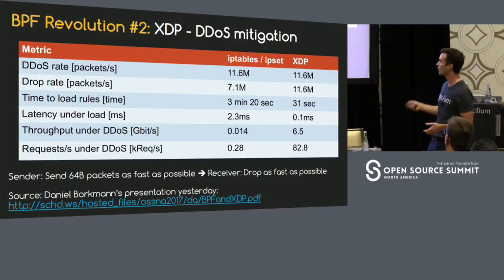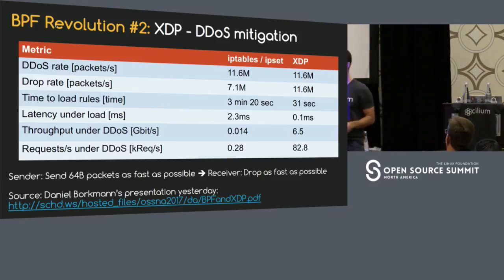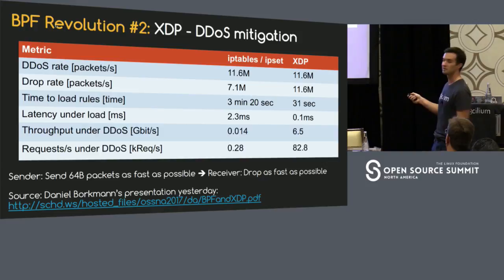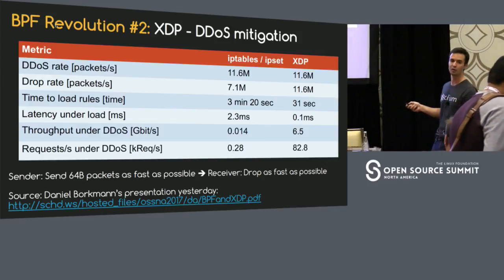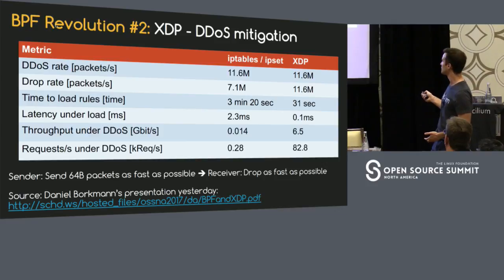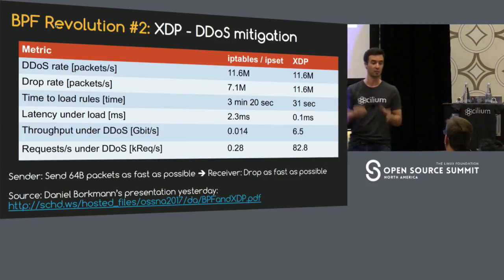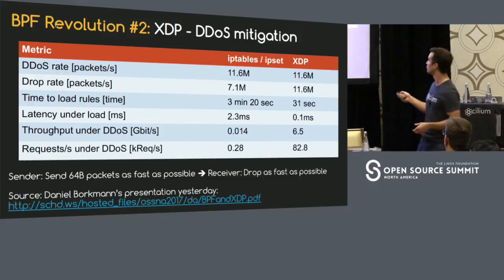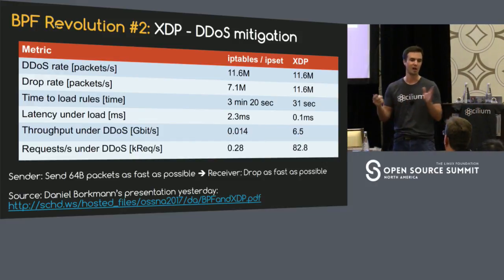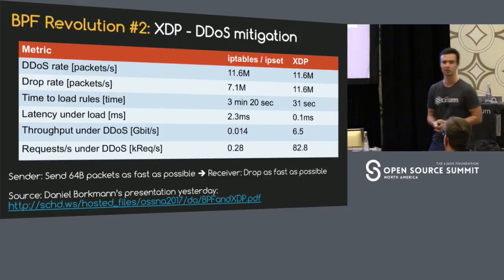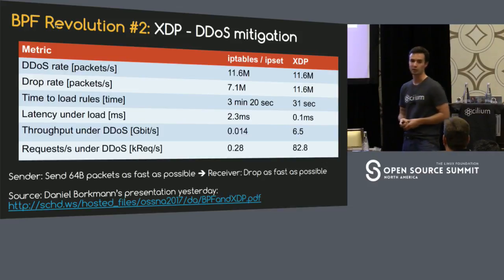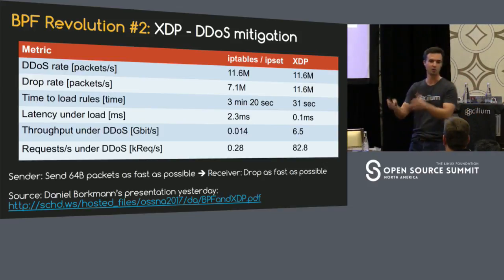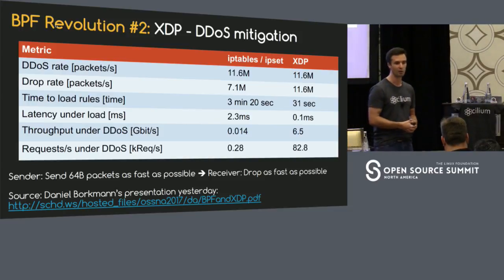The exciting part is the latency and throughput of a machine while it's under a DDoS attack. With IP set-based filtering, latency goes up to 2.3 milliseconds and throughput drops to about 0.014 gigabits — basically nothing. With XDP, latency stays extremely low and we can still use a good portion of our bandwidth. In terms of TCP requests per second, with IP tables IP set-based filtering we can do a couple of hundred. With an XDP-based filter, we can still handle thousands per second. Even under a DDoS attack, the machine remains reachable with low latency and can handle workloads.